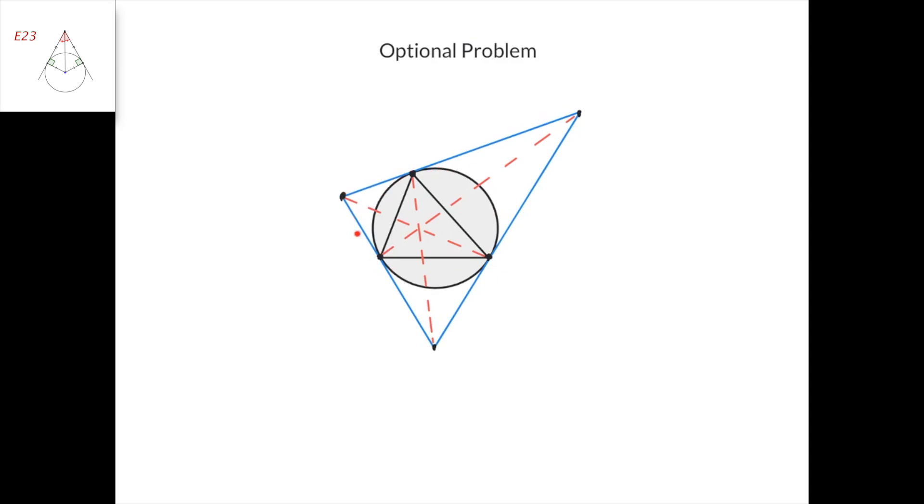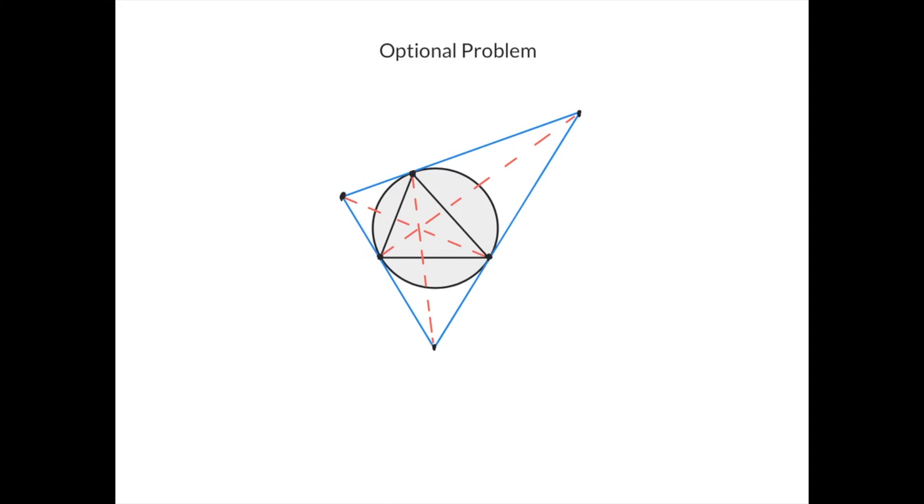So, this line, this line, and this line are all tangent to the circumcircle, respectively at this point, this point, and this point. We intersected these tangent lines at this point, this point, and this point, and we have to prove that this line, this line, and this line intersect at one point.